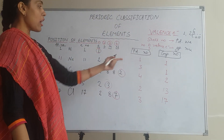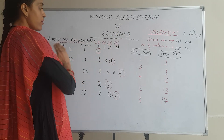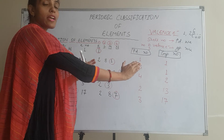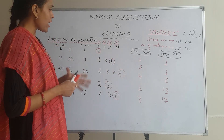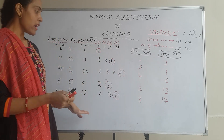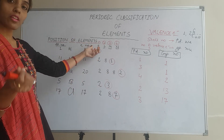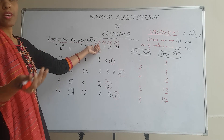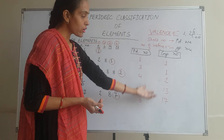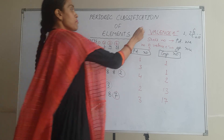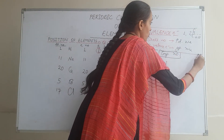Now you can practice for any element in the range of 1 to 20. This method is very tricky and very easy for you to find out the position of the elements in the periodic table — like where do they exist, to which period do they belong, to which group do they belong. This simple method will help you to know.